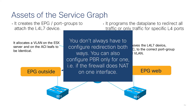You don't always have to configure redirection for both directions or both interfaces of the firewall. You could use PBR on just one interface — for instance, if the firewall does NAT on one interface, you may only need PBR on the other.